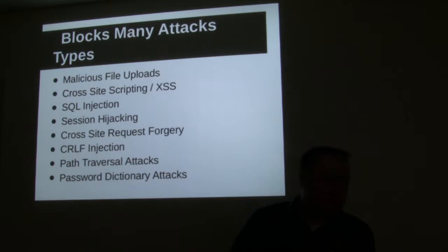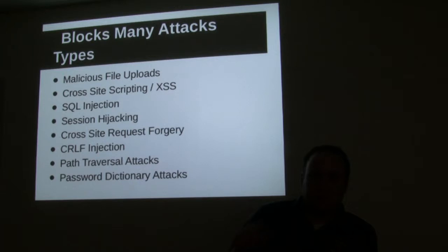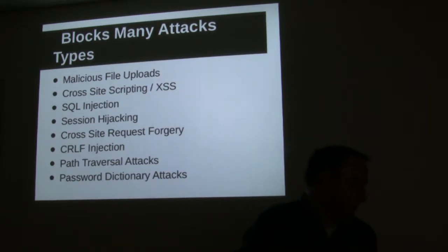What happens is: Bob goes to your website, and he has CF token at the end of the URL. He copies that and sends it to Mary, and she clicks the link — she would be authenticated as Bob if the session didn't time out. That's session hijacking. FuseGuard can block that. It also handles cross-site request forgery and CRLF injection — which I think involves carriage returns.